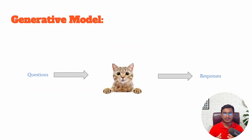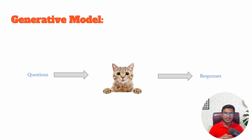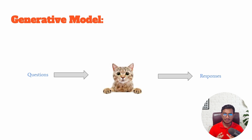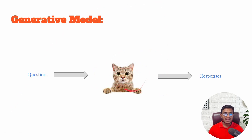The idea of generative models was taken from real life. Let's say I give you 10 different cat books and tell you to read all of them. After reading all 10 books, if I ask you anything related to cats, you'll be able to give me the answer because you have already studied about cats from 10 different books. That was enough data for you to learn about cats. So you have become one 'cat model', and if I give you any question you will be able to give me a response.